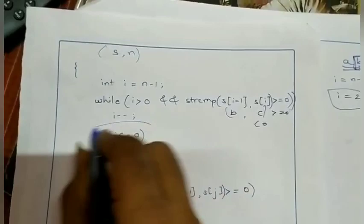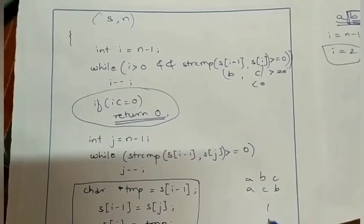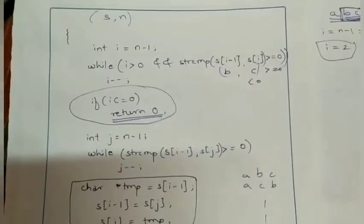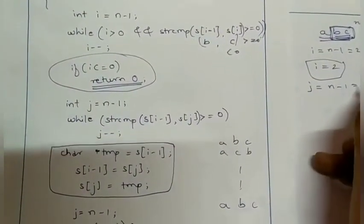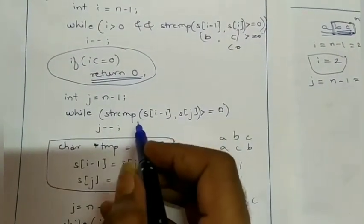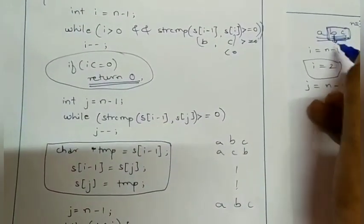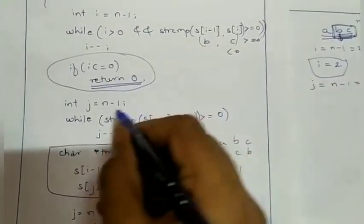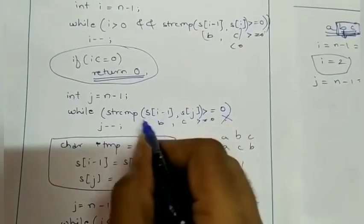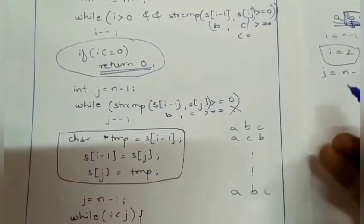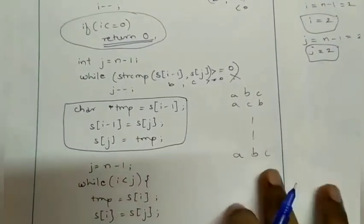Now we take another variable j equal to n minus 1, so j equals 2. We do str_compare with s[i-1], where i is 2, so s[i-1] is b. We compare b with s[j] which is c — this condition is false, so j does not decrement. Our j remains equal to 2.